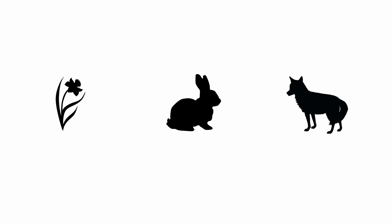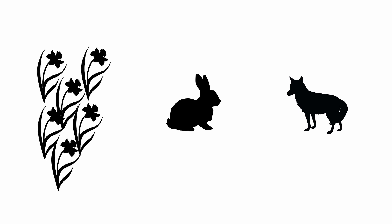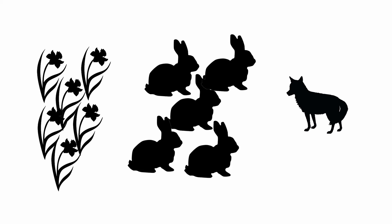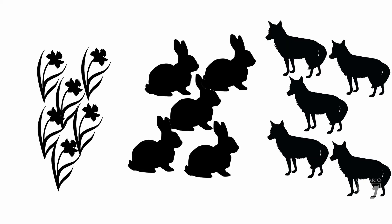Once the amount of rabbits has decreased, this will then allow the plants to start growing again, creating more food for the rabbits, allowing the population of rabbits to grow, which creates more food for the coyotes, allowing their population to grow — creating this beautiful life cycle that is all dependent on one another.